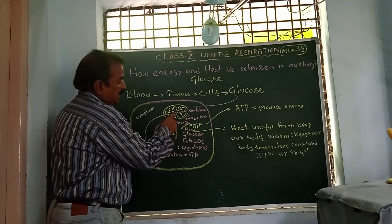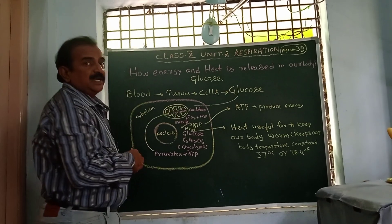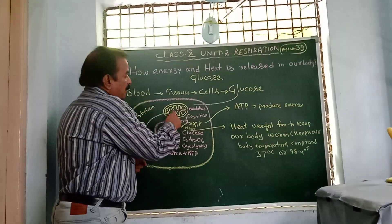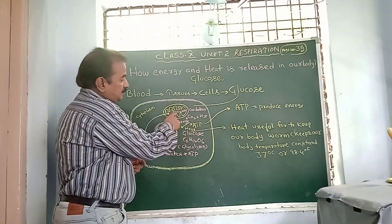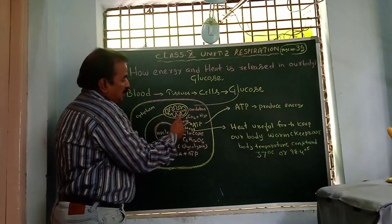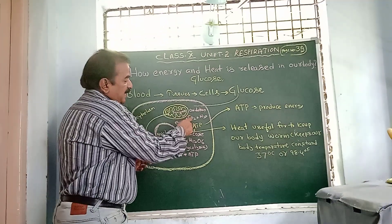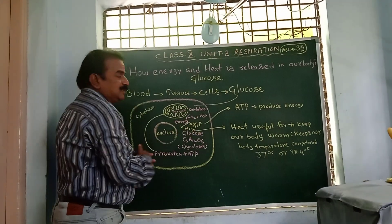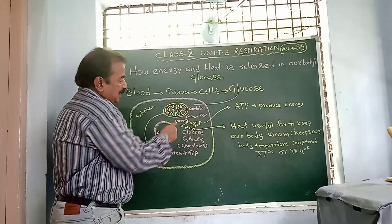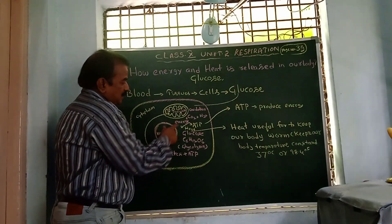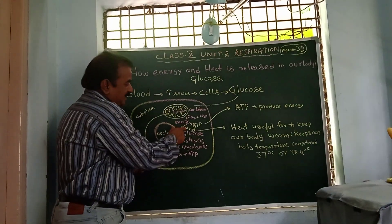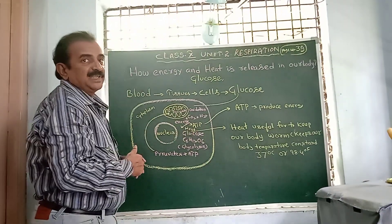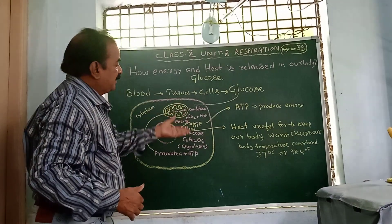If pyruvates enter the matrix of mitochondria, oxidation takes place and finally pyruvates are completely oxidized. After oxidation, energy is released, carbon dioxide is produced, water is produced, and heat is also generated. Energy is of two types: heat energy and chemical energy. ATP molecules are called chemical energy.